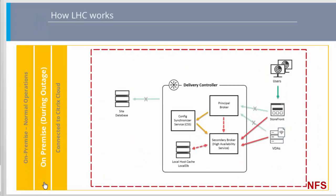How does LHC work on-premise during an outage? When an outage begins, the principal broker can no longer communicate with the site database, and stops listening for StoreFront and VDA information. The principal broker then instructs the secondary broker, the High Availability Service, to start listening for and processing connection requests. When the outage begins, the secondary broker has no current VDA registration data, but as soon as the VDA communicates with it, a re-registration process is triggered. During that process, the secondary broker also gets current session information about that VDA.